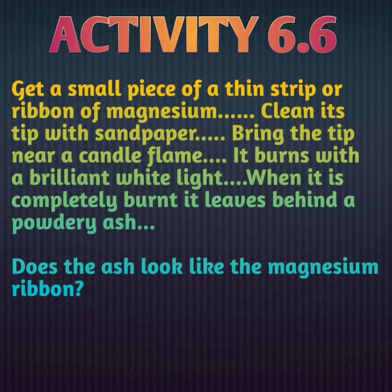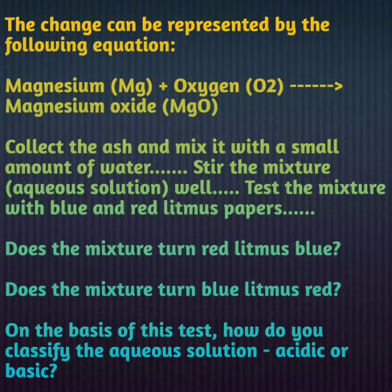Does the ash look like the magnesium ribbon? Obviously not — magnesium ribbon और उससे बनी ash दोनों एक से नहीं हैं. Strip का composition different है और उससे बनी राख का composition different है. Magnesium strip को burn करने के बाद जो reaction हुई है, उसे equation के form में लिखा जाता है: magnesium, in the presence of oxygen, when burned, forms magnesium oxide — वो जो राख बनी है, that is magnesium oxide.